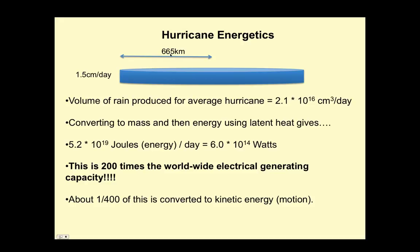Some simple hurricane energetics: an average-sized hurricane with about a 665-kilometer radius producing on average 1.5 centimeters per day of rain gives a volume of 2.1 × 10¹⁶ cubic centimeters per day. Converting that to mass using the density of water and then to energy using latent heat gives 5.2 × 10¹⁹ joules of energy per day, expressed as about 6 × 10¹⁴ watts — that's 200 times the worldwide electrical generating capacity. About 1/400th of this latent energy is converted to kinetic energy, the rotation we see in the cyclone itself. So hurricanes have a huge amount of power to work with but use a very small percentage of that to translate into rotation.